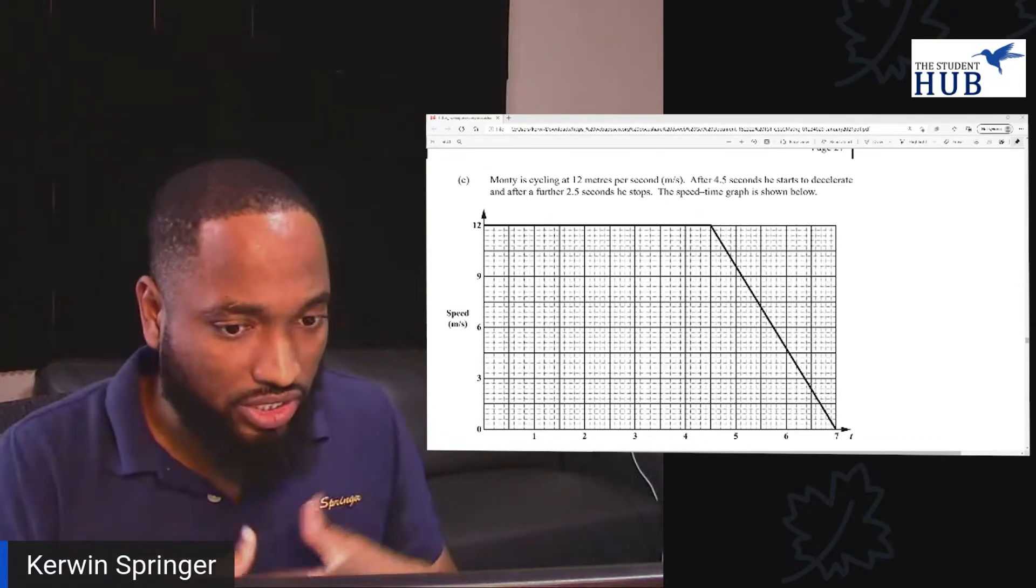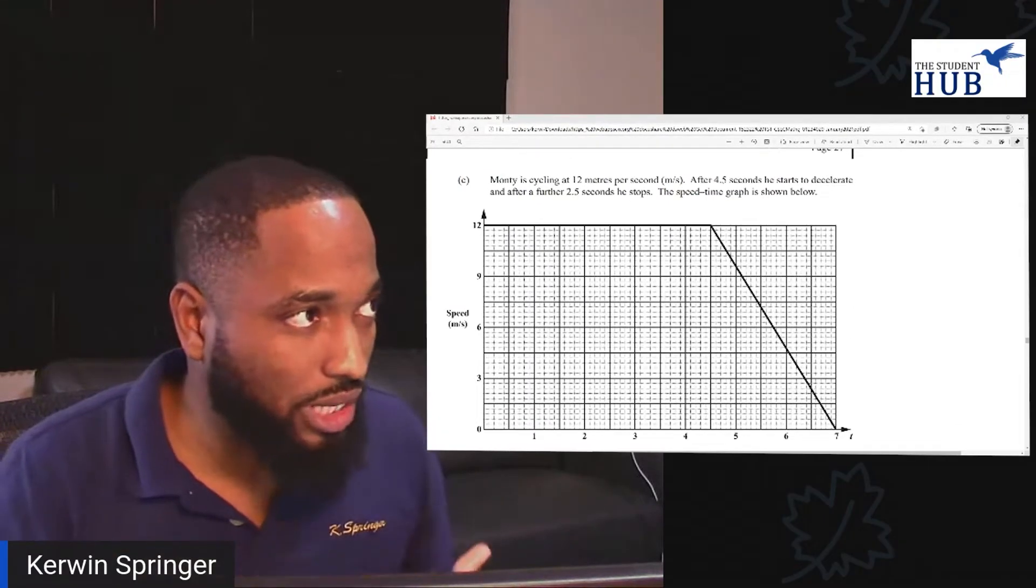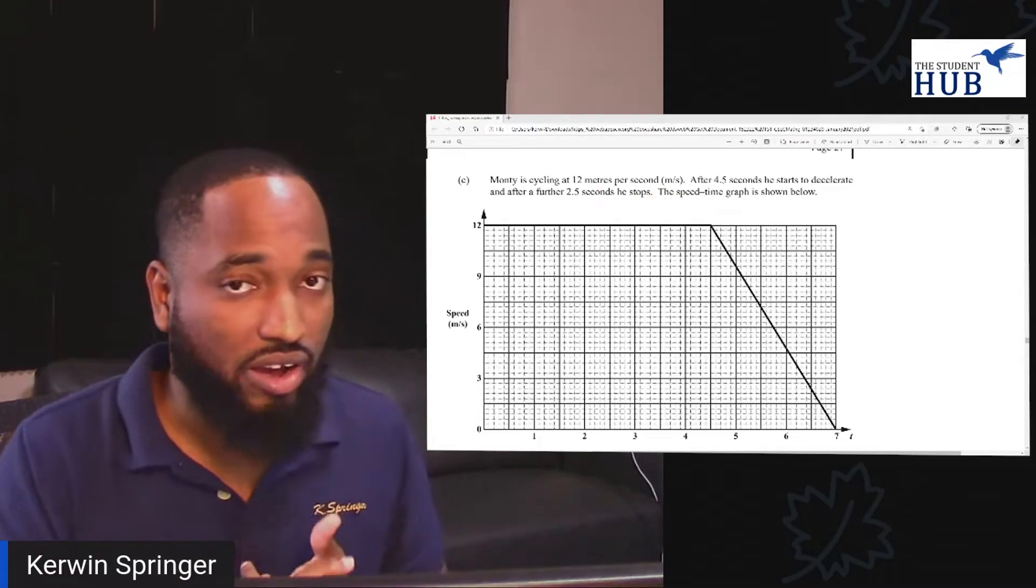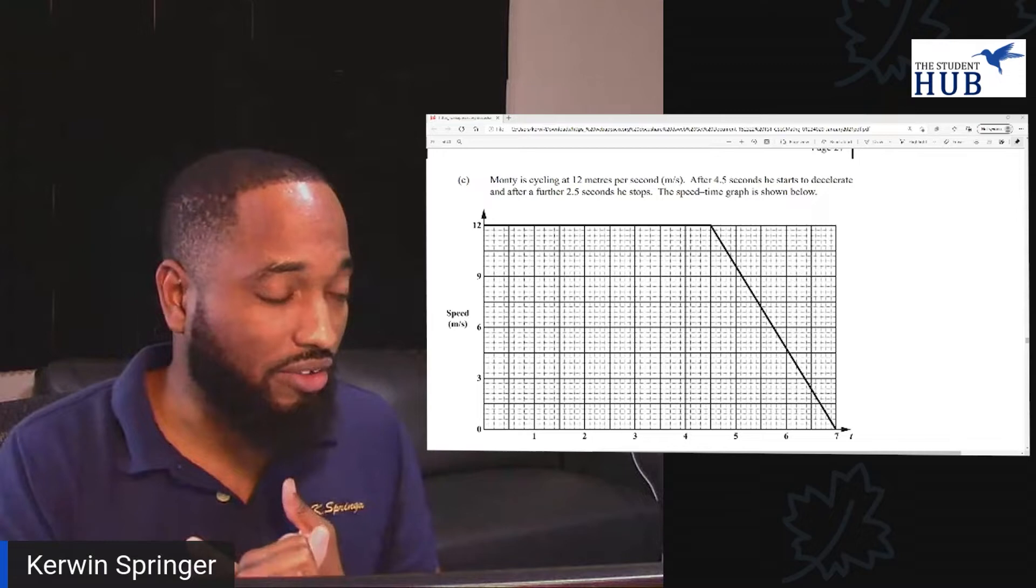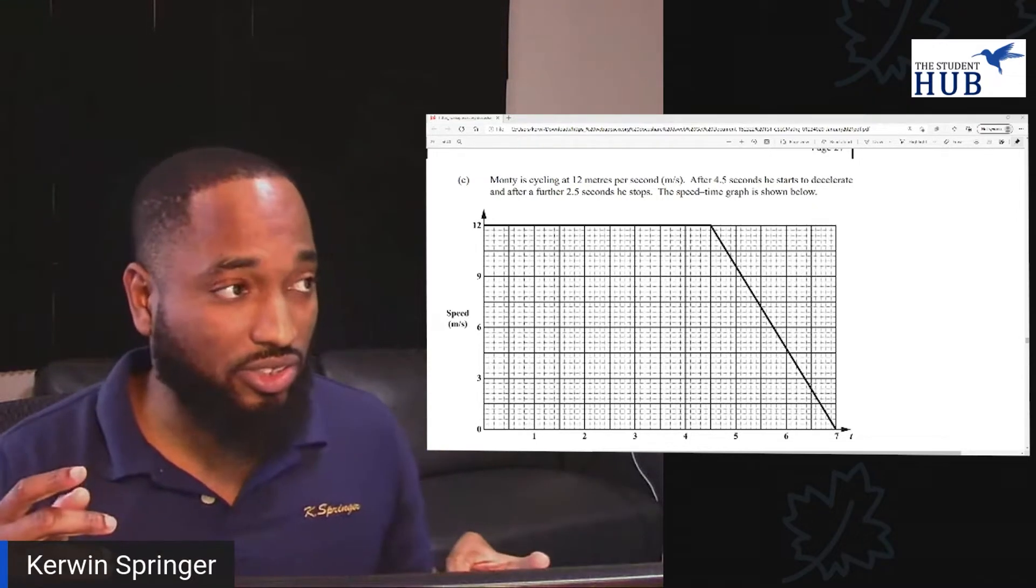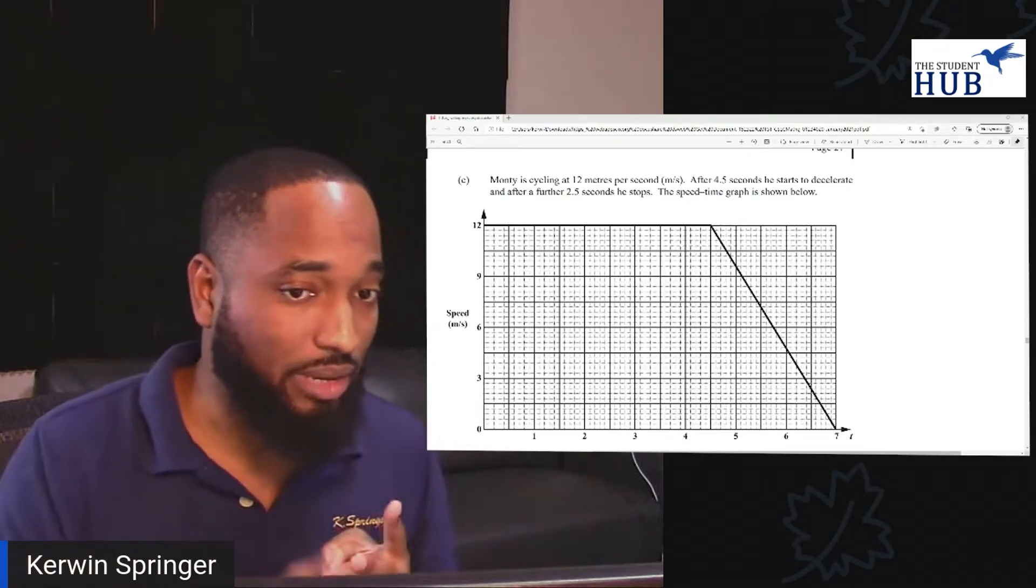And in this question, the speed time graph was drawn. Now, there are two types of motion graphs that CSEC brings. One is distance time graph and the other is speed time graphs. And there are some things that you need to know every time you see a distance time graph and some things that you need to know every time you see a speed time graph.